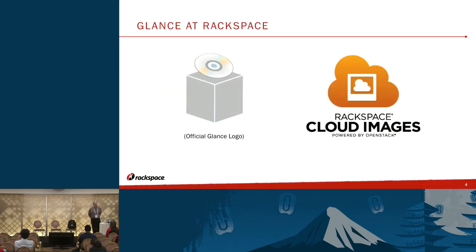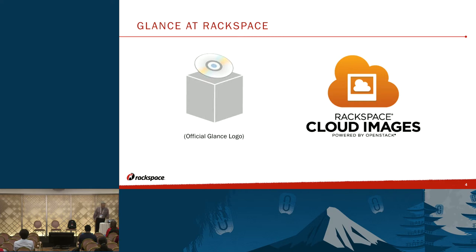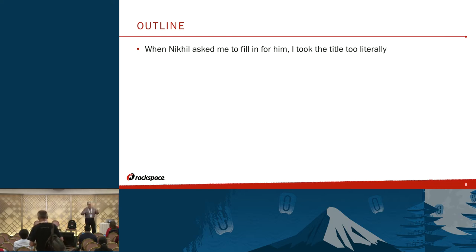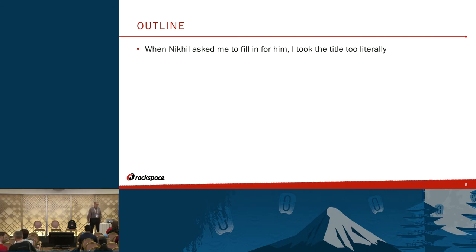At Rackspace, we have this product called Cloud Images — you may have used it. It's basically the Glance V2 API. So we're talking about the API going from version 1 to version 3. When Nikhil asked me to fill in, I think I took the title too literally — I thought, evolution, let's see what's happened with the API. I think he had a more focused idea of what he wanted to talk about.